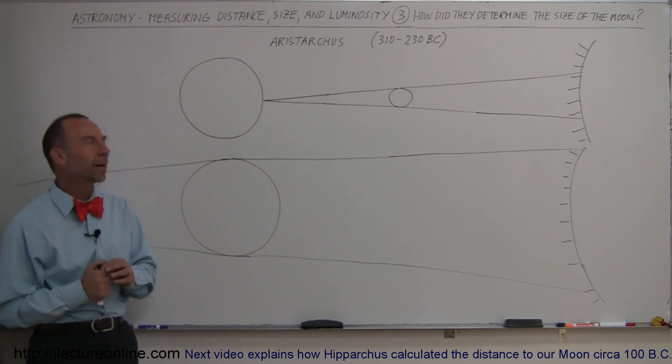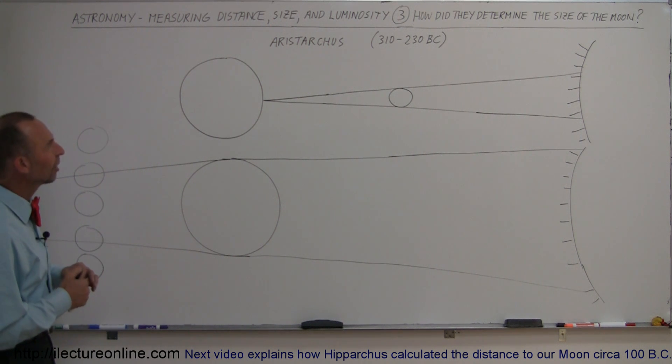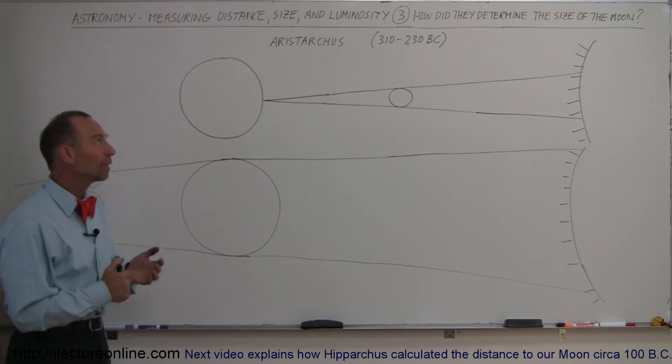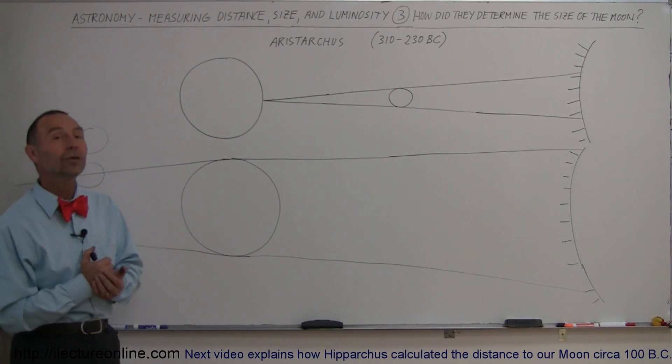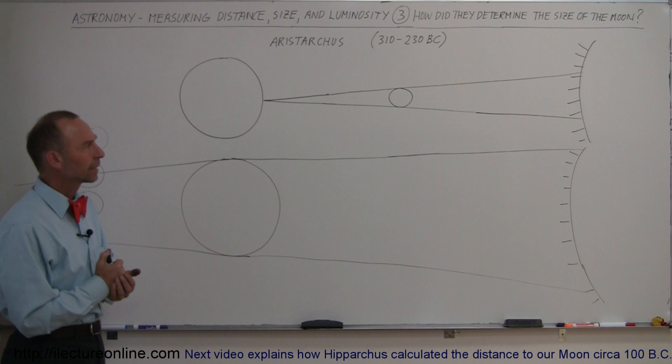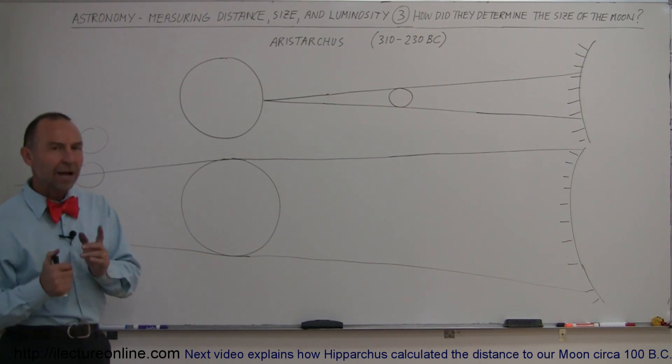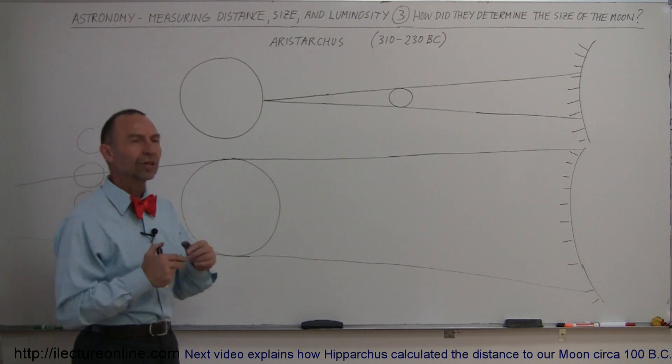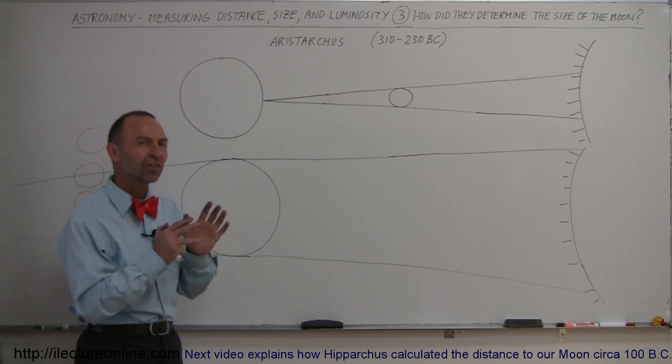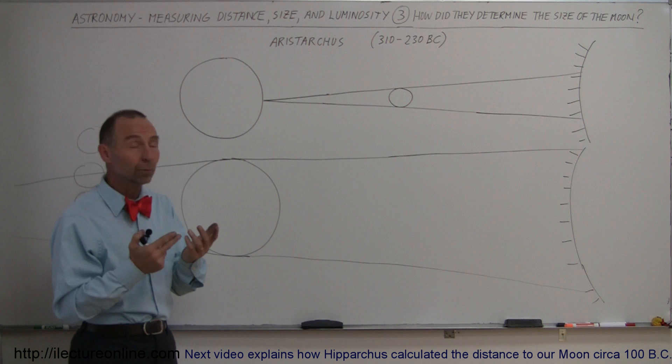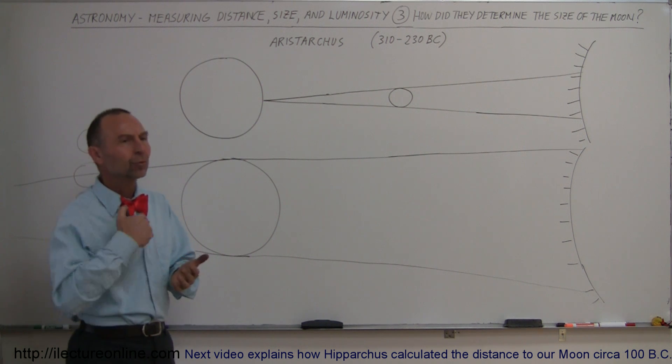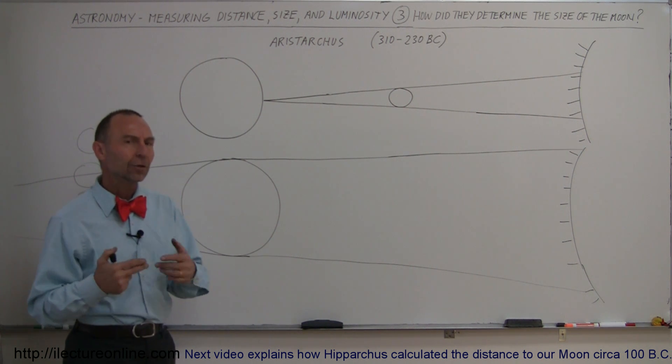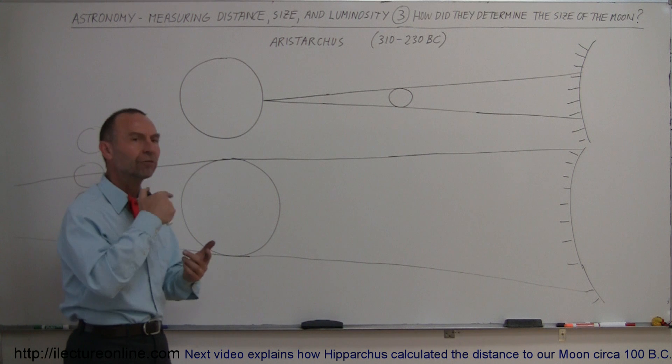But there were some smart people back then. One of them, his name was Aristarchus. He was a Greek who lived between 310 and 230 BC. What he surmised was, first of all, that the sun was much bigger than the moon and the Earth. He assumed that the sun was at the center of what they knew then was the universe, and that the Earth revolved around the sun. He also assumed that the moon revolved around the Earth.